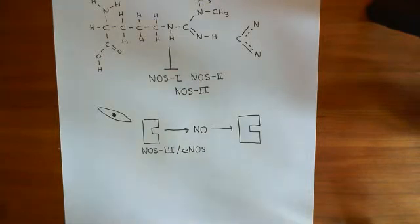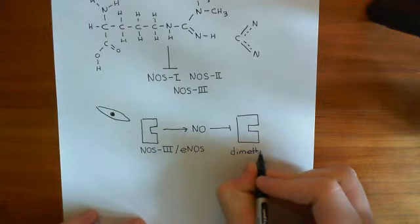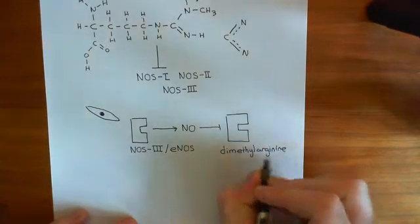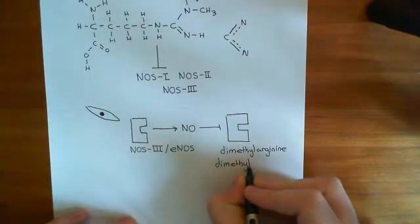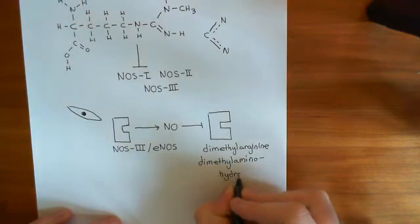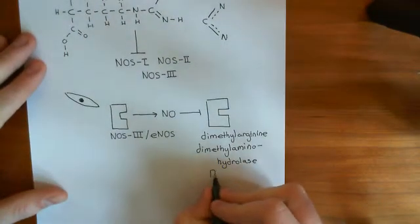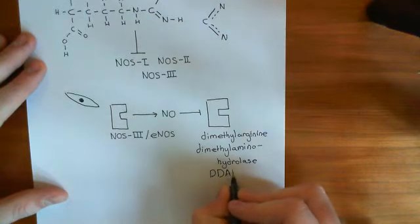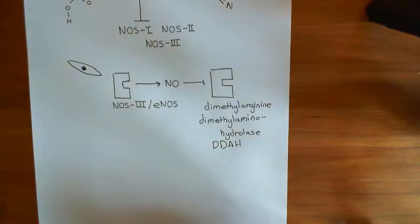This enzyme is known as dimethylarginine dimethylaminohydrolase — people often abbreviate this to DDAH: D for dimethylarginine, D for dimethyl, A for amino, and H for hydrolase. So DDAH stands for dimethylarginine dimethylaminohydrolase.